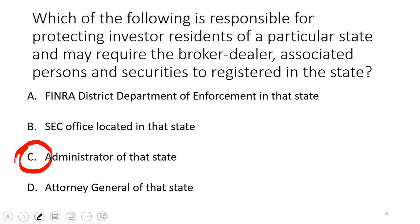If you're taking the Series 63, that means you'll just be an agent of the broker-dealer. The Series 66 allows you to be both an agent of the broker-dealer and an investment advisor representative of the affiliated investment advisory firm.